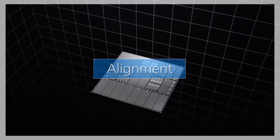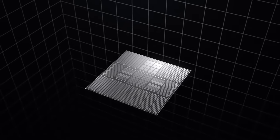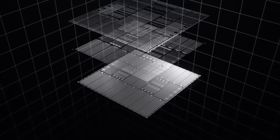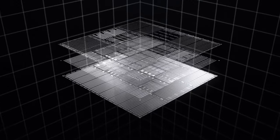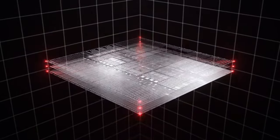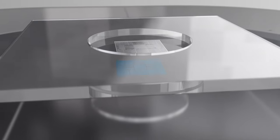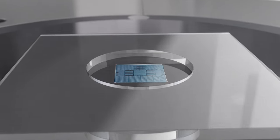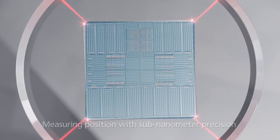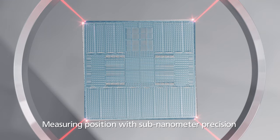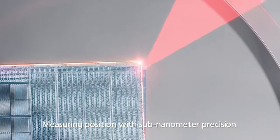Modern semiconductor chips are created by combining countless layers of stacked circuit patterns. This requires precise alignment of circuit patterns. Canon has developed technology to overlay circuit patterns with extreme precision by measuring their position with precision finer than 1 nanometer.